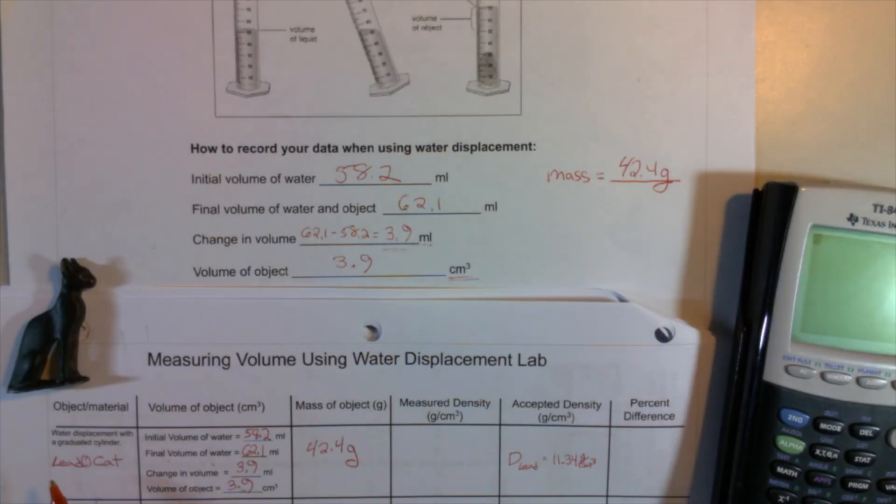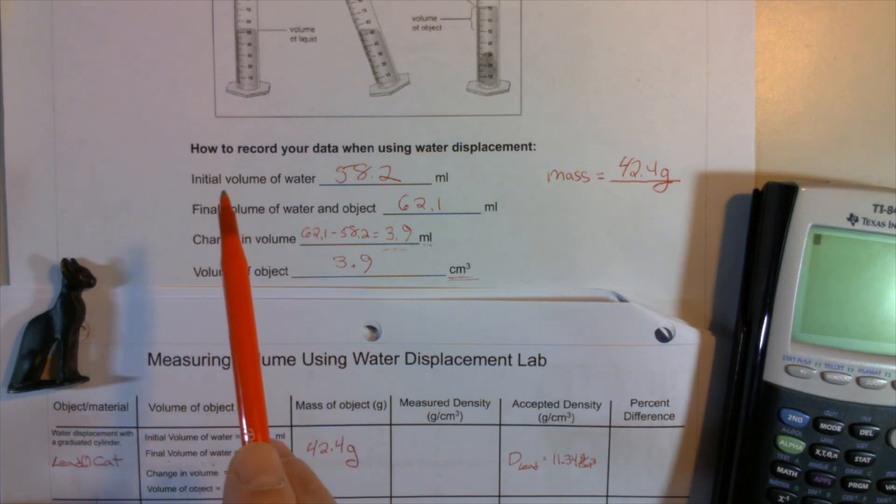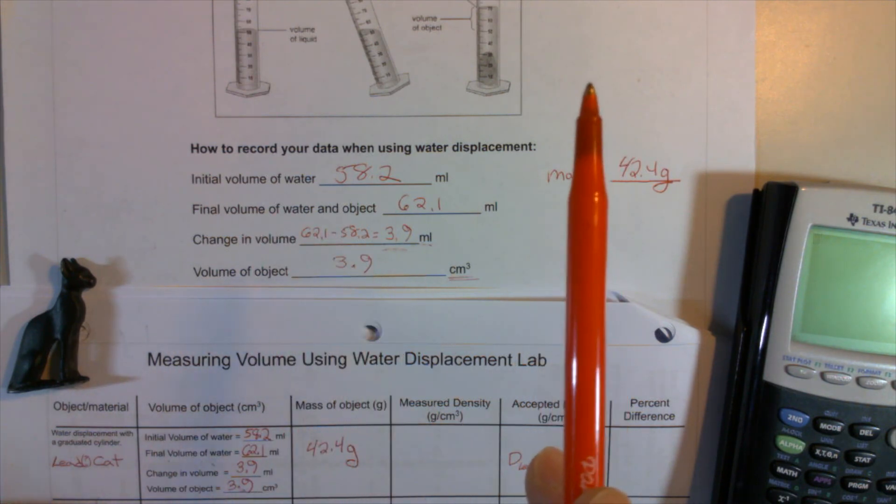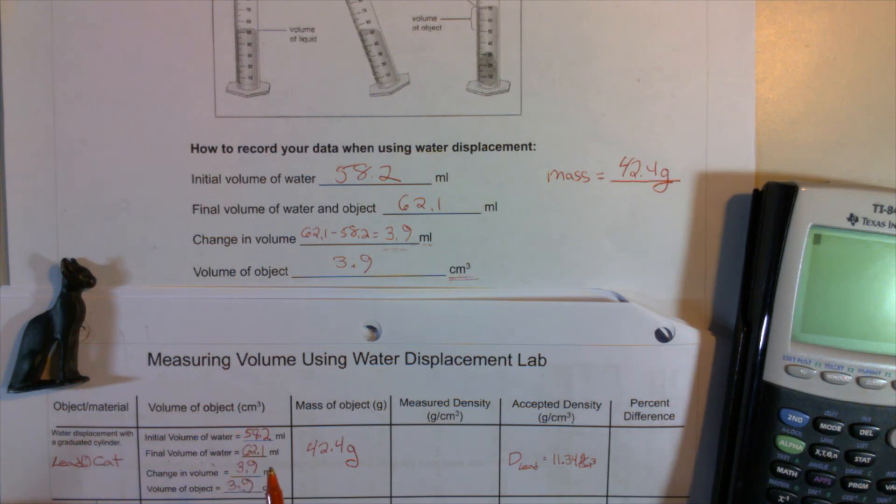I've written in what the object was. I put the question mark for lead because I'm not really sure that's what it is, the cat. You can see that I wrote down the initial volume of water right here, and it's 58.2 milliliters. The final volume after the object's been put in, and that's 62.1. I made the subtraction, the 3.9, and you can see change in volume, 3.9 milliliters. And then the change over in units to cubic centimeters to represent the fact that we're actually talking about a solid object. I also transferred the mass.